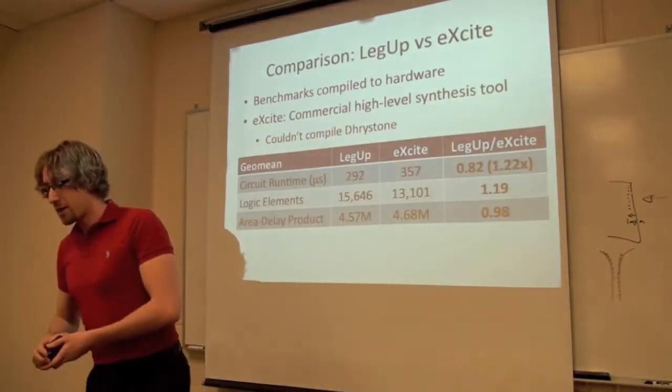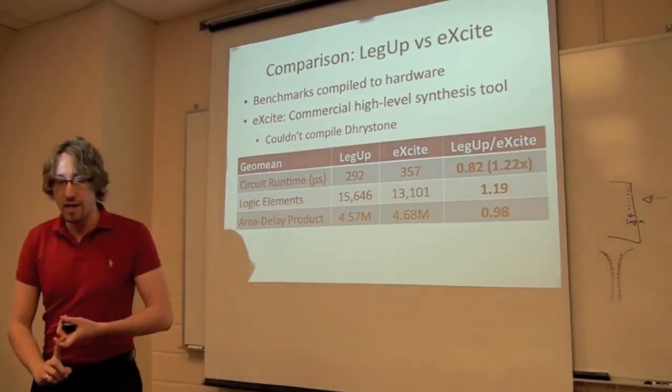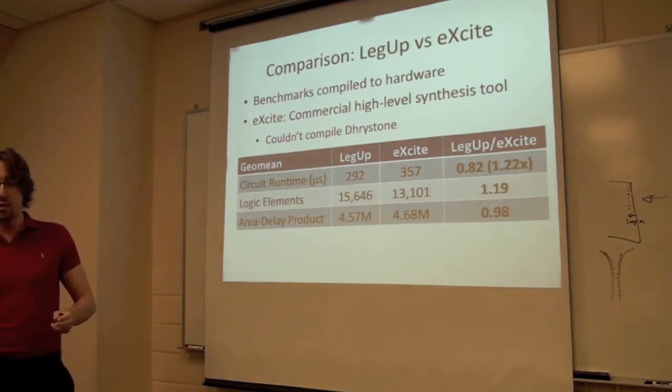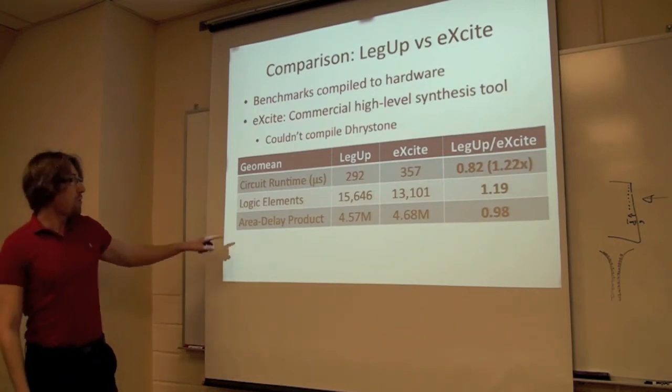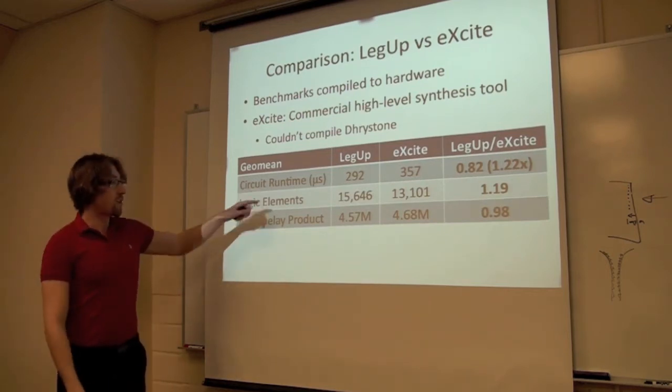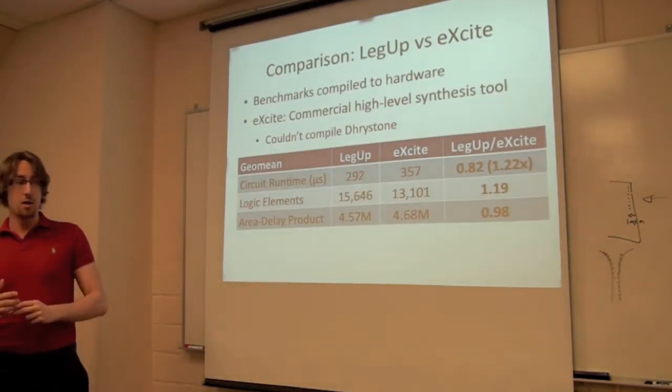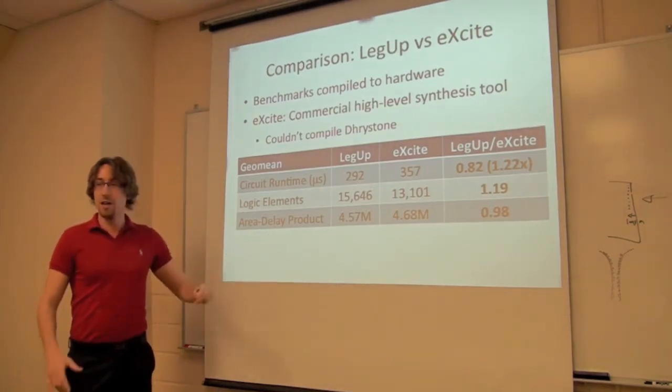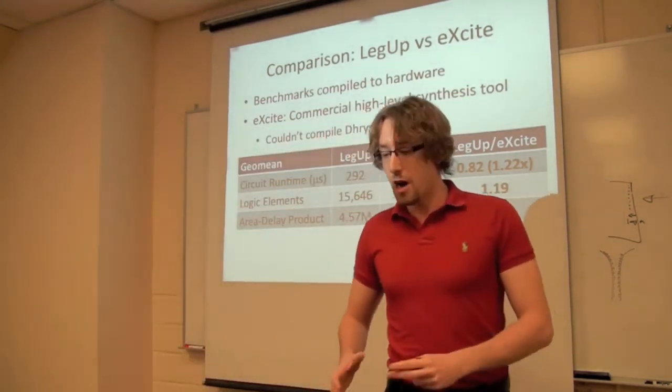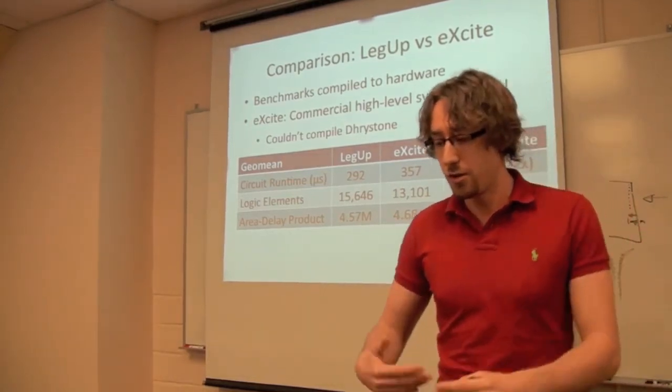So one of the questions you'd like to ask is how does our high level synthesis tool compare to a commercial tool. The only commercial tool we could get our hands on was a tool called Excite. It can't compile Drystone so we just ignored that benchmark. But it supports the whole CHStone benchmark suite. What we found was we took the C programs and compiled them entirely into hardware. Our circuit run time was about 20% faster than Excite. But our logic elements were about 20% higher. So if you look at an area delay product metric we were roughly on par with Excite. So what does this tell us? It tells us we're in the same general ballpark as a commercial tool. So it's a somewhat decent baseline to start off with. We will make improvements from here.